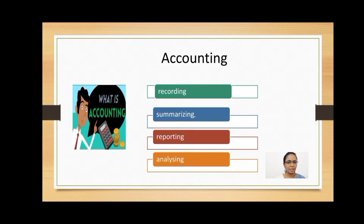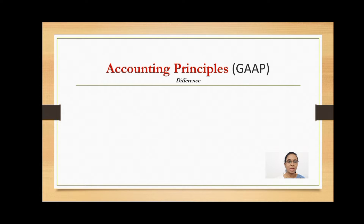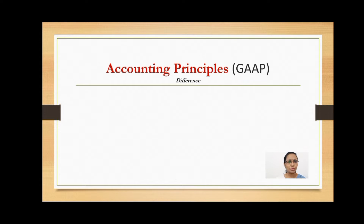After understanding the meaning of accounting, we move towards the accounting principles. Accounting principles, also known as GAAP — that is Generally Accepted Accounting Principles — are the rules and guidelines adopted for recording and reporting of business transactions. Each and every business organization maintains records of transactions and prepares various accounting statements that reflect the financial position, so while preparing the reports they have to follow these rules and guidelines. These principles are adopted by accountants universally and also make it easy to understand. These accounting principles are very useful and can be classified into two categories.